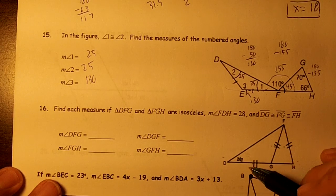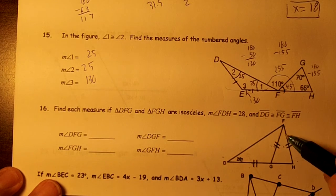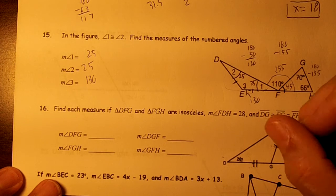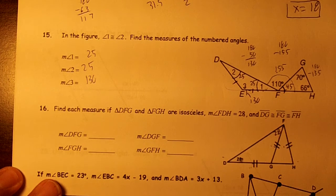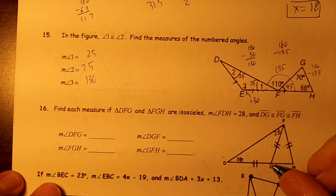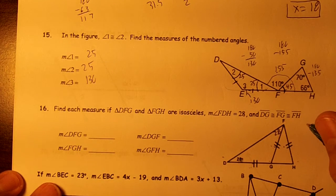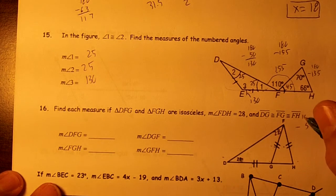If this is 28, this angle is 28. So go ahead and put that. This angle is going to add to these to give us 180. So 28 and 28 is 56. Subtract from 180, you get 124. That's gonna be 124.